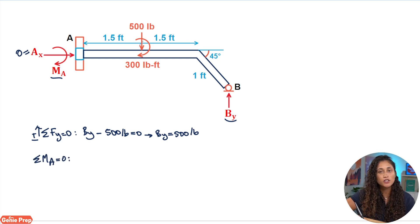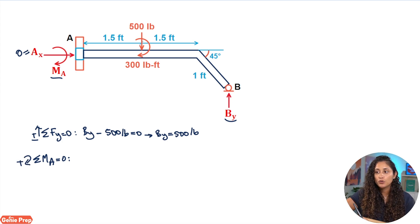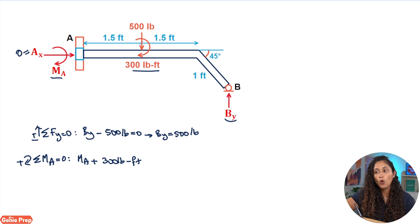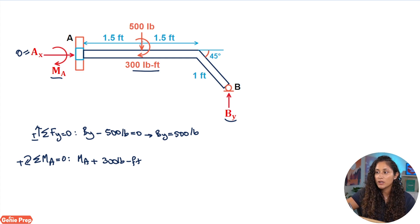Now let's set up our moment equation: summation of moments at A equals zero, with clockwise as positive. We have the moment at A, which is positive since it follows our sign convention. Then we add the 300 lb·ft applied moment — that's positive as well since it's also clockwise. Remember, this is an applied moment, so it only appears in the moment equation.